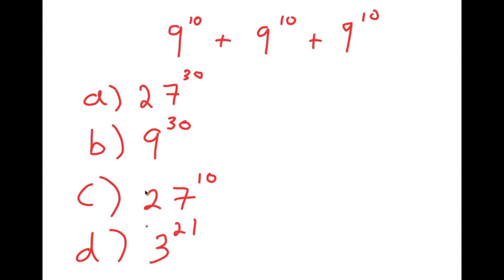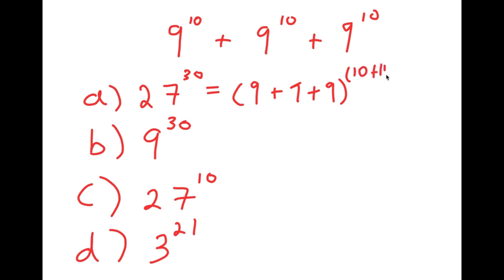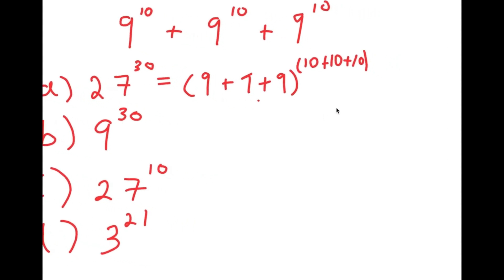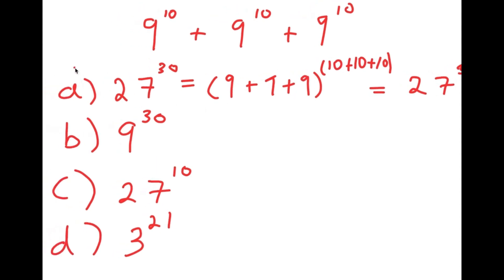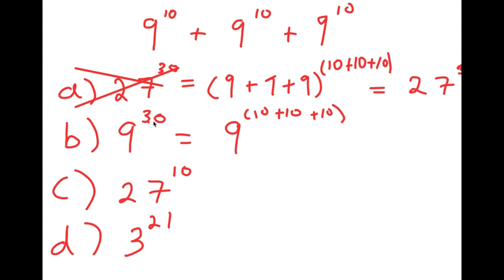Let's go through all the answer choices and see if they're right or not. For A, 27 to the power of 30 was likely arrived at by adding all the bases and adding all the exponents: 9 plus 9 plus 9 to the power of 10 plus 10 plus 10, which equals 27 to the power of 30. This is wrong because that's not the proper way to add exponents. For B, 9 to the power of 30 was gotten by keeping the base the same and adding the exponents — this is also wrong.